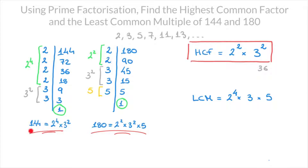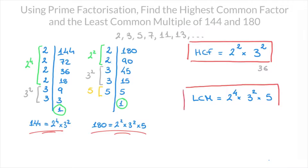We now focus on 3: both 144 and 180 have 3 raised to the power of 2, so the highest power of 3 is 2, and we write that as well. Finally, looking at the prime factor 5: 144 doesn't have 5 as a prime factor, but 180 does, and the power of 5 here is 1. Remember, we never write the power 1 on any number, so we leave the 5 as it is in our least common multiple. We now have the LCM of 144 and 180. If we calculate it: 2⁴ is 16, times 3² which is 9, times 5 — multiplying all of that together gives us 720.